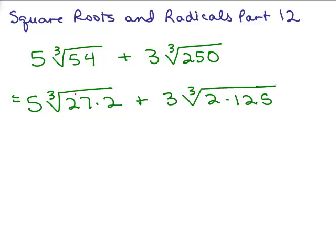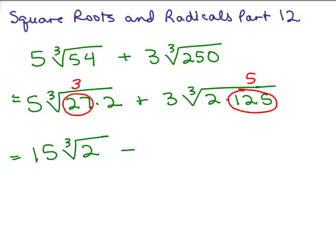All right, so I can take out of the first one, cube root of 27 is 3 and out of the second one, cube root of 125 is 5. So I have 5 times 3, 15 on the outside, cube root of 2 plus, on the outside here I have 3 times 5, another 15, cube root of 2.